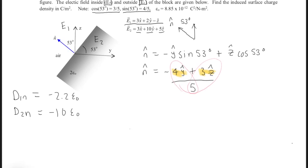And how to find surface charge density? We do surface charge σ = D1n - D2n. And if we plug in our numbers, we get -2.2ε₀ minus -10ε₀. And because this is a minus and a minus, we get plus. So what we end up getting is we get 7.8ε₀.